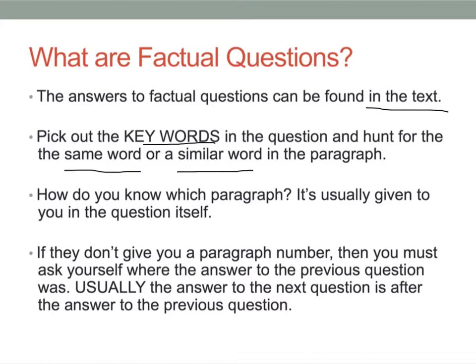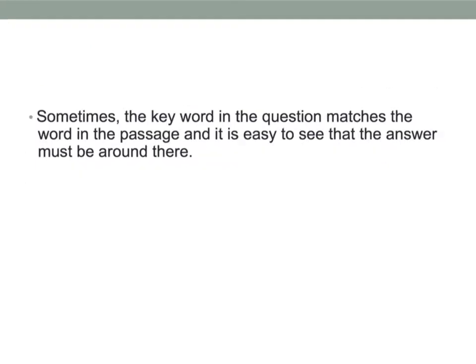So how do you know which paragraph? Well, it's usually given to you in the question itself. But if they don't give you a paragraph number, then you must ask yourself where the answer to the previous question was. Usually — and I'm saying usually, not always — the answer to the next question is after the answer to the previous question. The easiest type of factual question to answer is the one where the key word in the question matches the word in the passage, so it is easy to see that the answer must be somewhere around there.